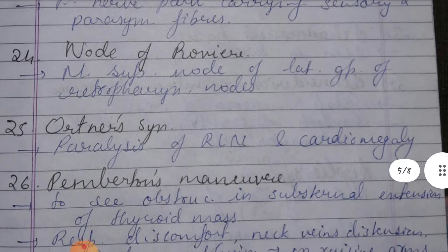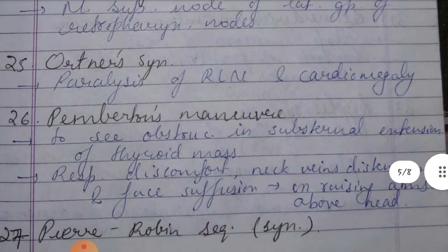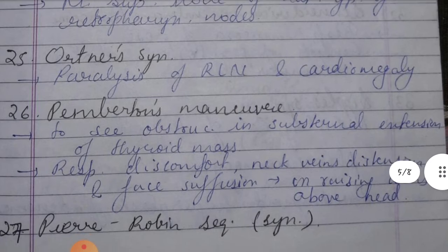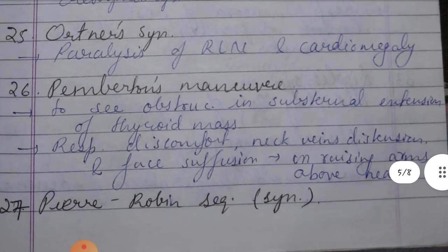Twenty-fifth is Ortner's syndrome — recurrent laryngeal nerve paralysis and cardiomegaly (enlarged heart size).